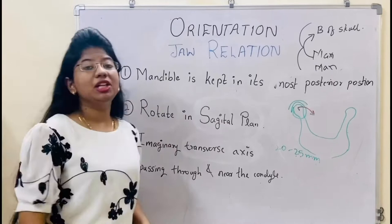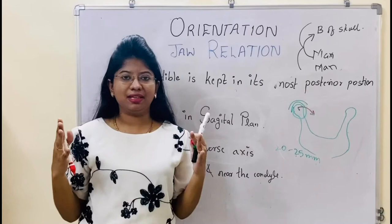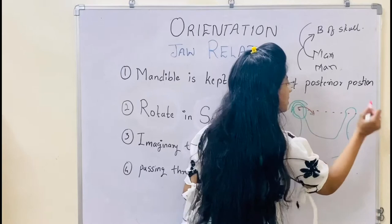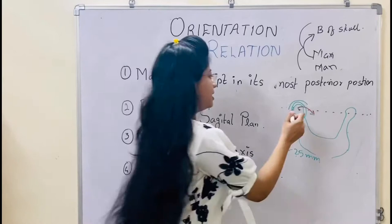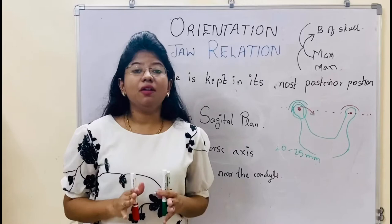So in orientation relation, what happens? There is rotation of the condyle in the sagittal plane around an imaginary transverse axis. Our cranium doesn't have any visible axis, that's why it is said there is an imaginary transverse axis passing through or near the condyle, on which there is rotational movement in the sagittal plane. It is the orientation relation — the relation of maxilla to the base of the cranium.